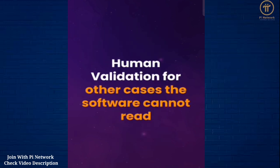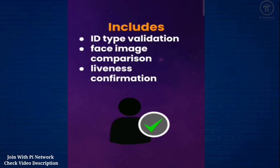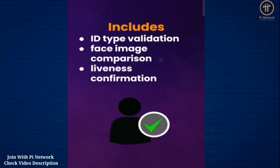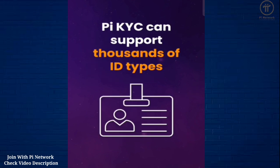Human validators will only help with the identity authentication process when machine automation falls short, including ID type validation, face image comparison, and liveness confirmation to prevent cheating in the KYC process. These are selected pioneers who have already passed KYC, verified their identity, and have legally agreed to maintain the confidentiality of any data they see. As there are thousands of ID types in the world, human validators from your local region are the best knowledgeable individuals to assess that information.